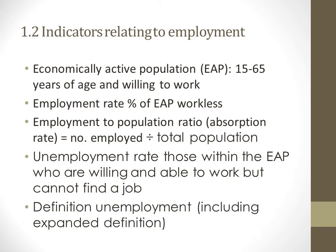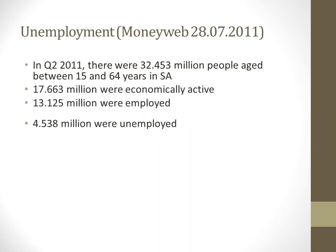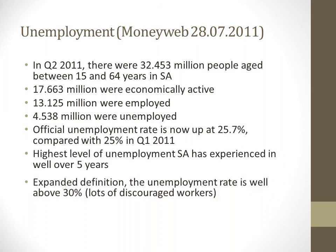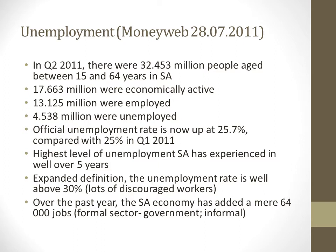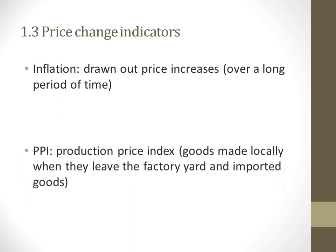The expanded definition of unemployment also includes discouraged workers — people who have given up trying to find a job. The official unemployment rate sits at about 25%, while the expanded rate is around 40%. Looking at some figures from 2001: 17 million were economically active, 13 million were employed, and 4 million were unemployed. The official unemployment rate is now 25.7%, up slightly from 25% in Q1 2011, with roughly 4.5 to 5 million people unemployed.